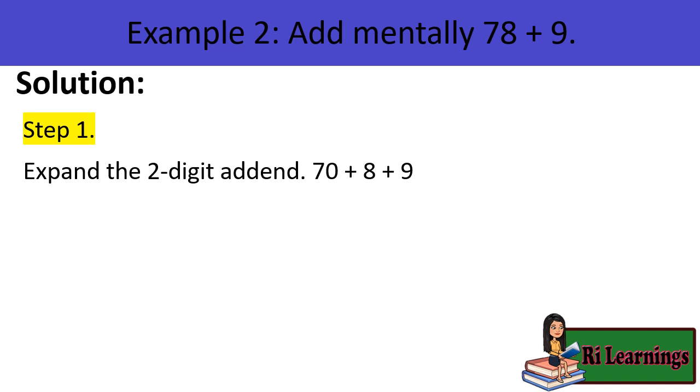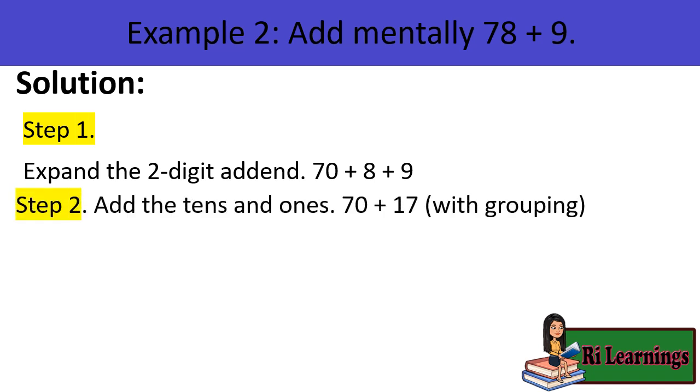Step 2, add the tens and ones. 8 plus 9 equals 17, then we will have 70 plus 17 with grouping. 17 is a new addend that needs to expand. Step 3, expand the new addend. 70 plus 10 plus 7.